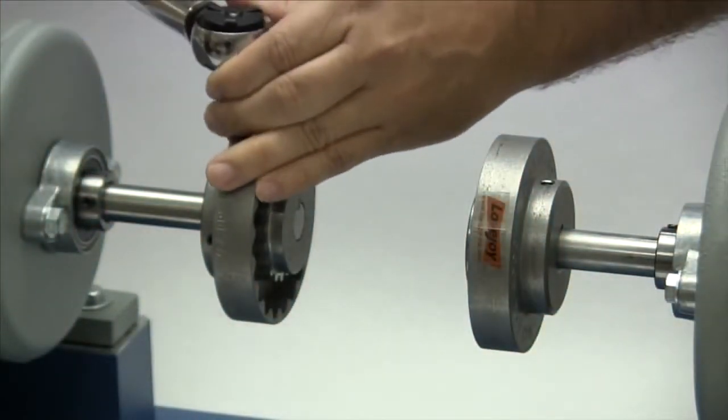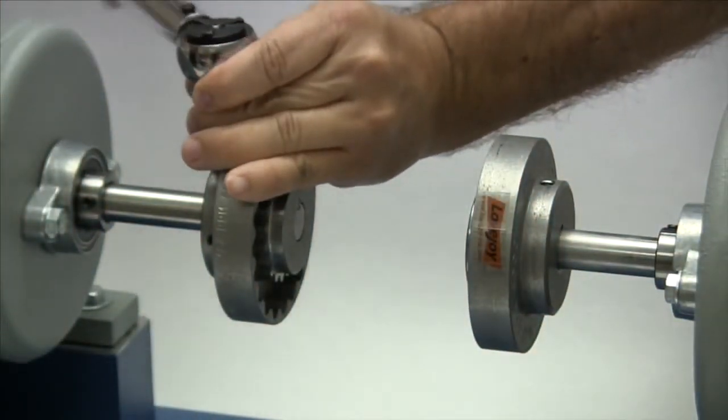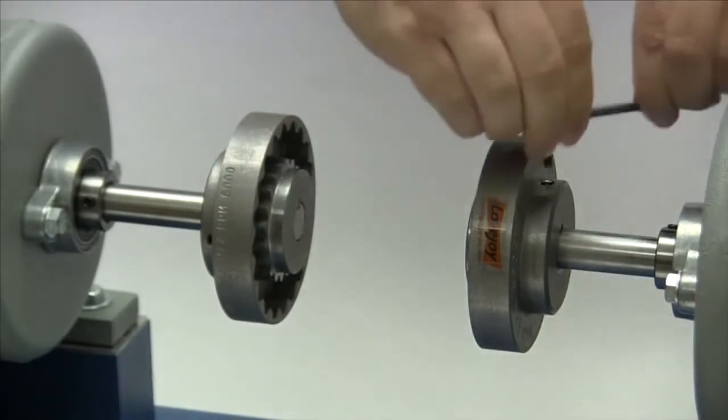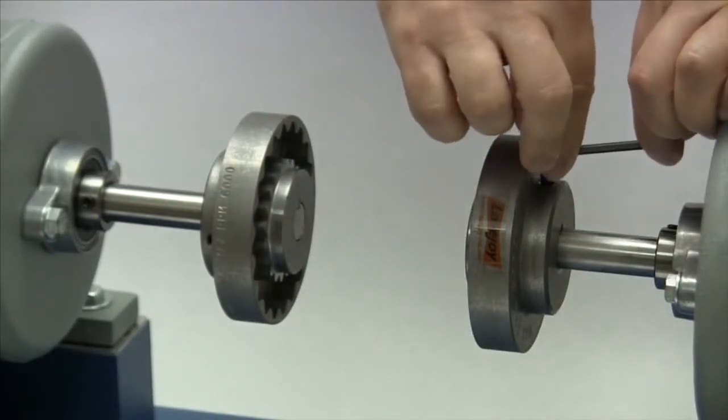We will tighten the set screws in one flange to the required torque, then lightly tighten the set screws in the second flange to allow for possible axial adjustment after the equipment is moved into place.